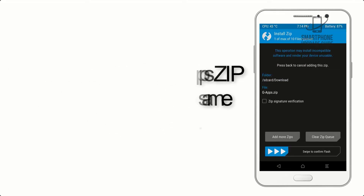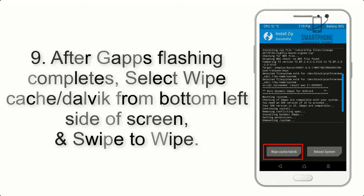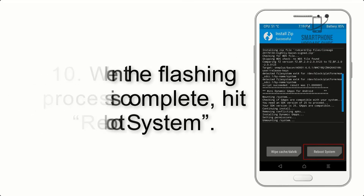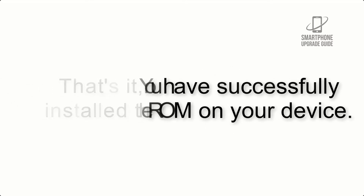Step 8: Flash the GApps zip package in the same manner. Step 9: After GApps flashing completes, select Wipe Cache/Dalvik from the bottom left side of the screen and swipe to wipe. Step 10: When the flashing process is complete, hit Reboot System. That's it — you have successfully installed the ROM on your device.